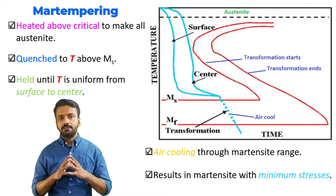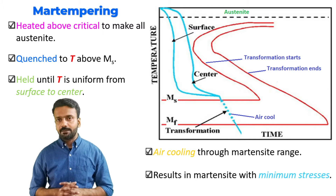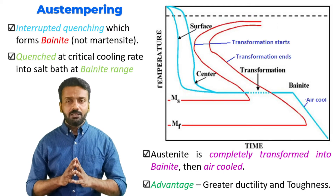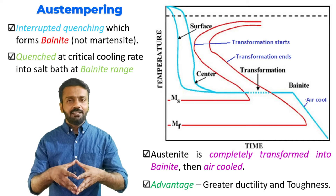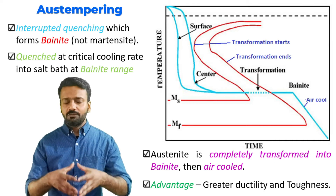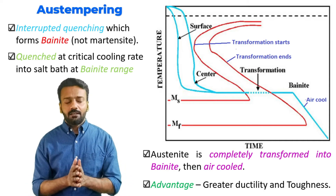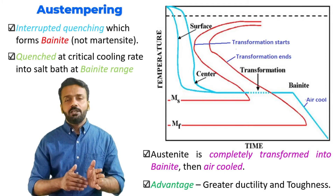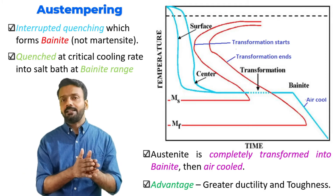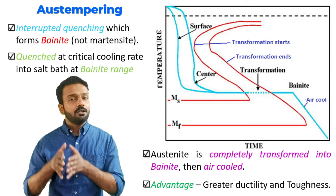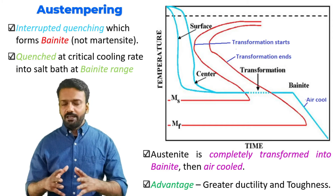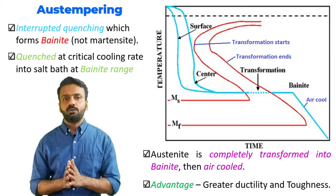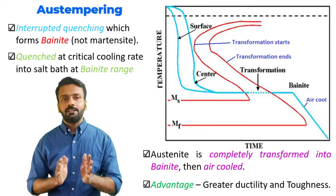Here the cooling cycle for austempering is shown. The material is cooled just above the martensitic start transformation temperature, and from there it is transformed into bainite. It is held at that temperature until bainite is fully formed, then cooled in air. The austenite is completely transformed to bainite before air cooling.